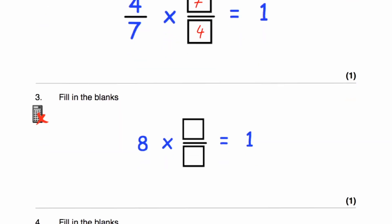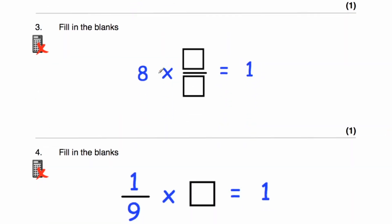Question 3 says 8 multiplied by something is equal to 1. If you consider a pizza or cake and cut it into eighths, 8 eighths would equal a whole. So 8 multiplied by an eighth equals 1. And to check: 8 is the same as 8 over 1, and flipping it over gives 1 eighth. So 8 multiplied by 1 over 8 is equal to 1.